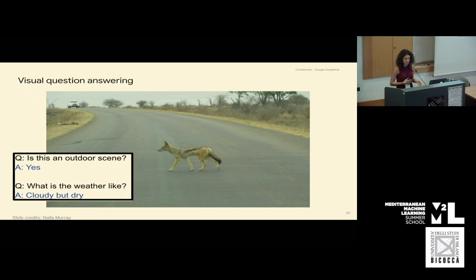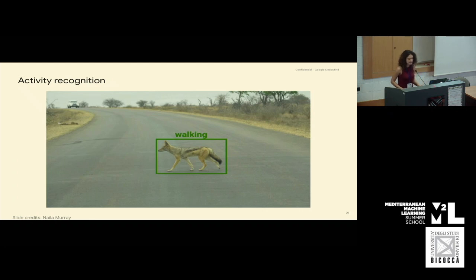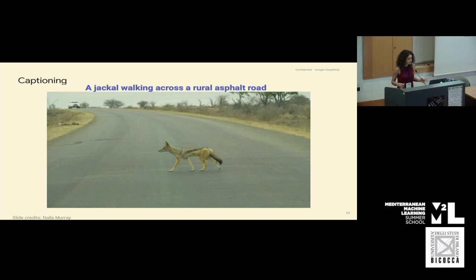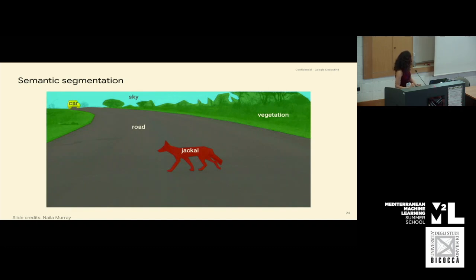There is visual question answering about the image — for example, 'Is this an outdoor scene? Yes. What is the weather like? Cloudy but dry.' Another task would be activity recognition: which activity is being done in this image — in this example, walking for the jackal. There is pose estimation, which is often attributed to humans, usually meaning finding the joints of a human in an image, and in this case it also translates to an animal. Captioning briefly explains what is happening in an image: 'a jackal walking across a rural asphalt road.'